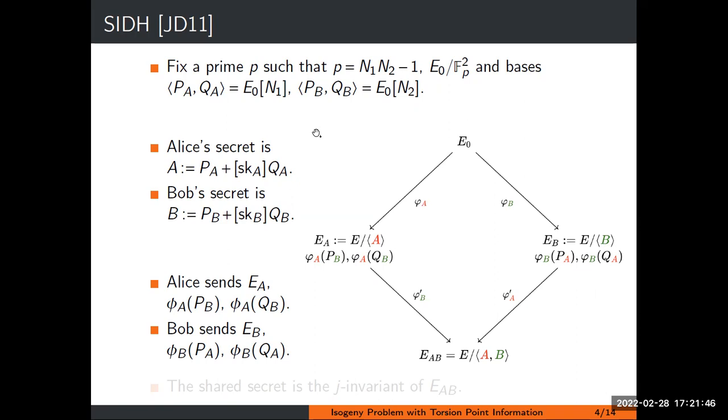However, just knowing the codomains of these isogenies is not enough to find a common shared secret. So they reveal extra information, namely Alice reveals the action of her isogeny on Bob's torsion generators, and Bob does the same with his secret isogeny. Then they both can compute the curve EAB, where A corresponds to Alice's secret kernel and B corresponds to Bob's secret kernel, and their shared curve is EAB.